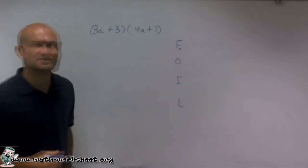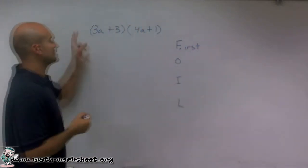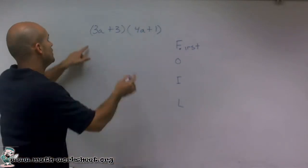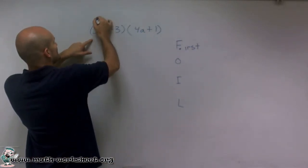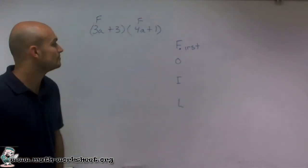F stands for the first. So I'm going to look at this binomial times a binomial and say, what is the first going to represent? What the first represents is my first two terms of each binomial.